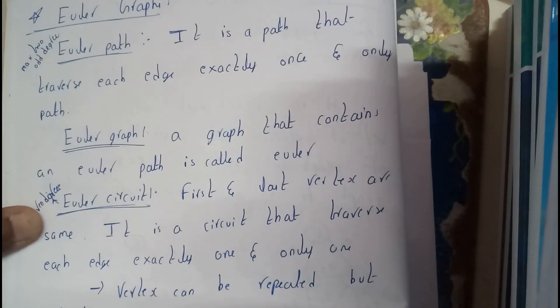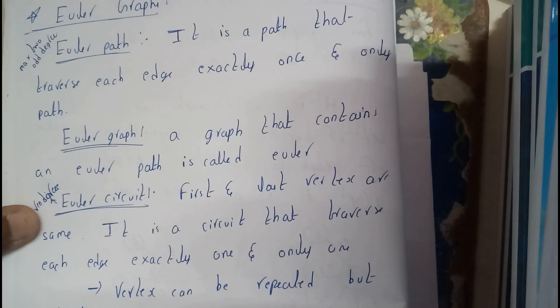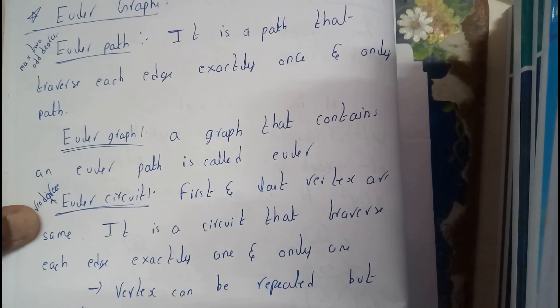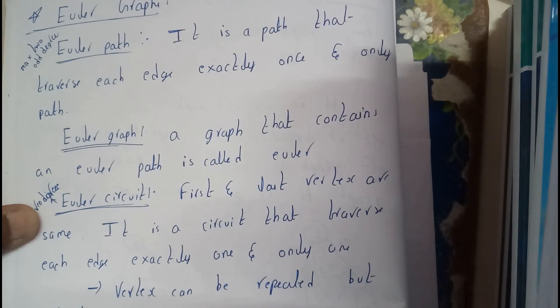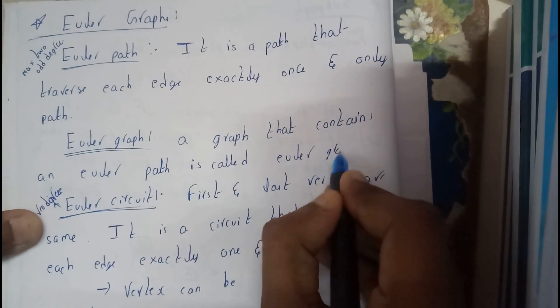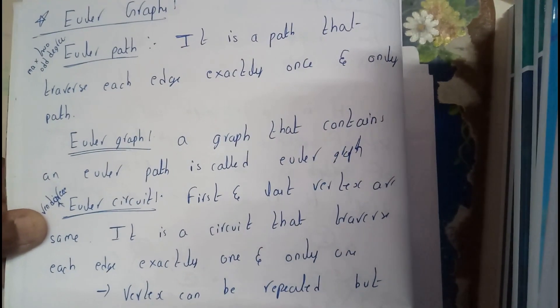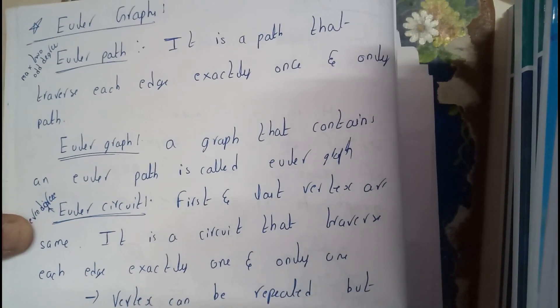So let's see what is an Euler graph. A graph that contains an Euler path is called an Euler graph. Okay, now we are clear with Euler graph and path. Now let's see what is the Euler circuit.